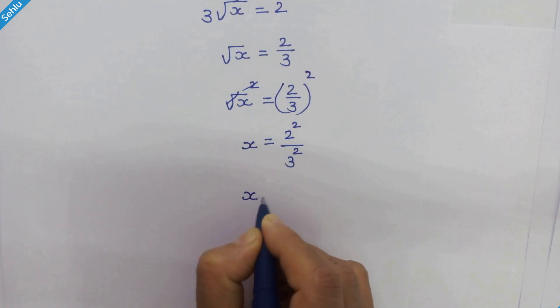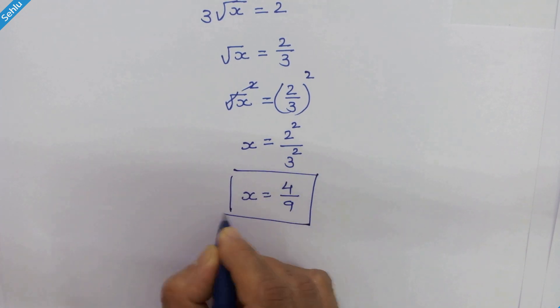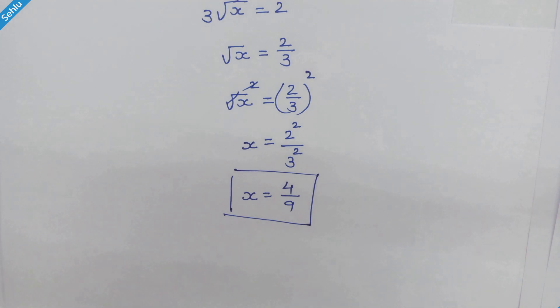So x equals 2 squared is 4, and 3 squared is 9, giving us x equals 4 over 9. We have the value of x. Let's check this answer.